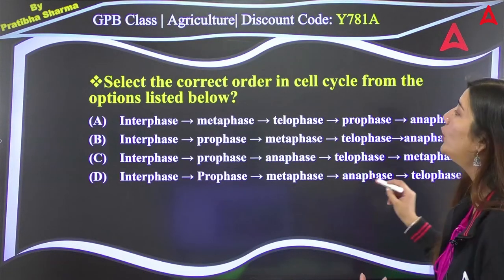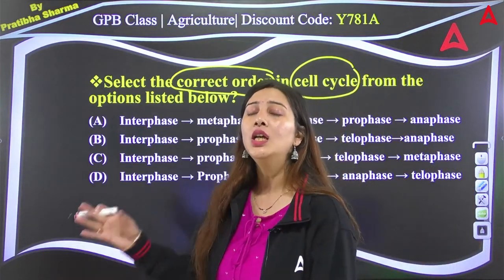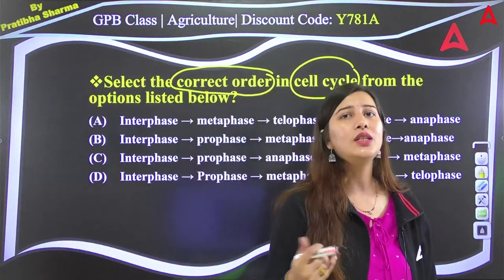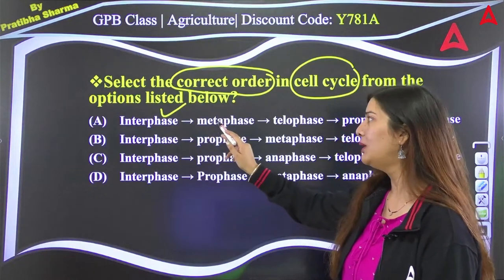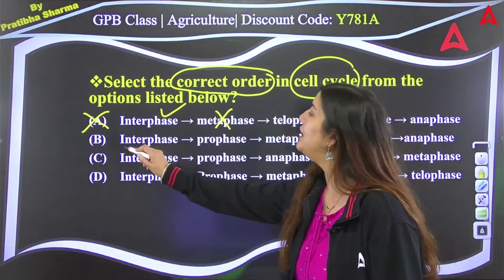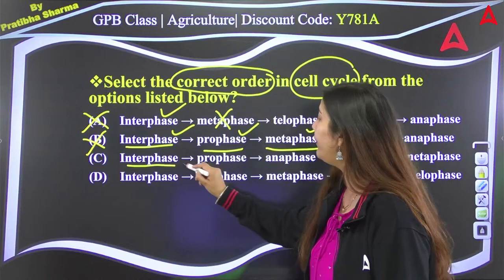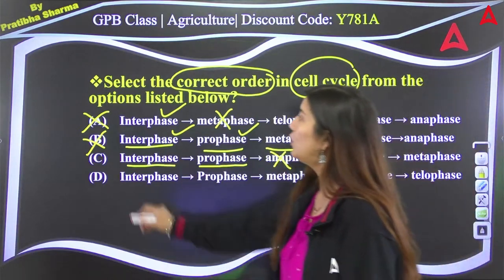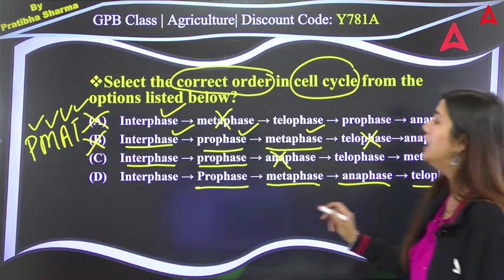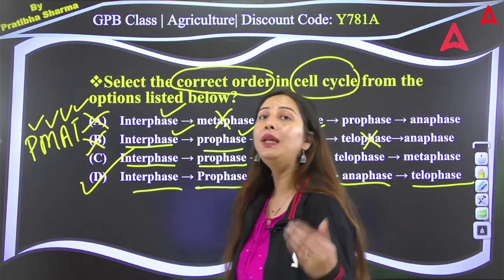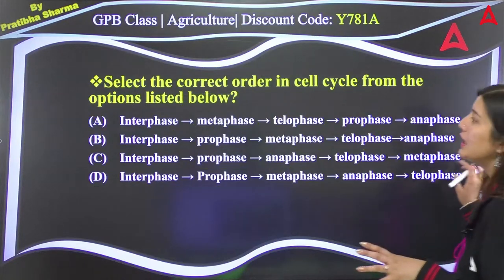The next question, asked repeatedly in state-level exams: what is the correct order of the cell cycle? The correct order of mitotic phases is: interphase, then prophase, metaphase, anaphase, telophase. Remember the mnemonic PMAT — Prophase, Metaphase, Anaphase, Telophase. This is the correct answer.